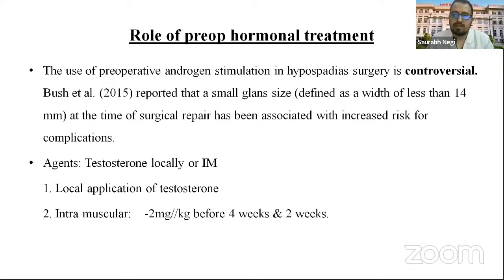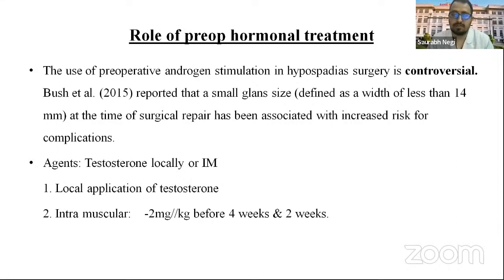Role of pre-operative hormonal treatment: the use of pre-operative androgen stimulation in hypospadias surgery is controversial. Bush et al. in 2015 reported that small glans size — less than 14 mm at the time of surgical repair — is associated with increased risk of complication. Agents commonly used are testosterone locally or intramuscularly. The intramuscular dose is 2 mg/kg, given four weeks and two weeks before surgery.